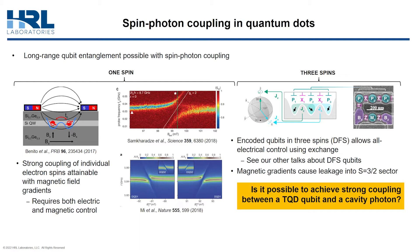See, for example, this paper from Delft or this paper from Jason Pettit's Group at Princeton. Both papers find characteristic vacuum Rabi mode splitting, which is indicative of strong spin-photon coupling. However, the approach that they use with micromagnets will not generalize to multi-spin encoded qubits.